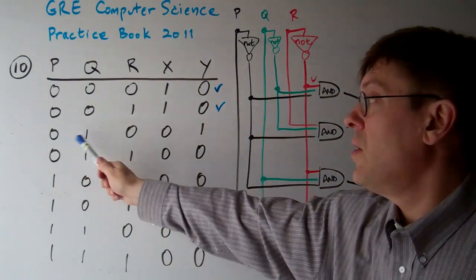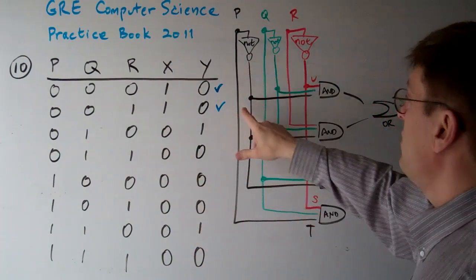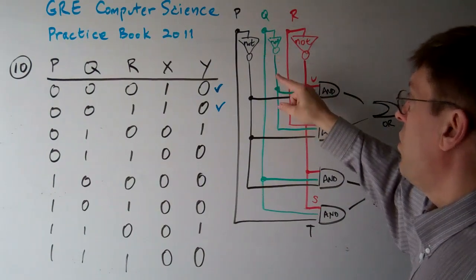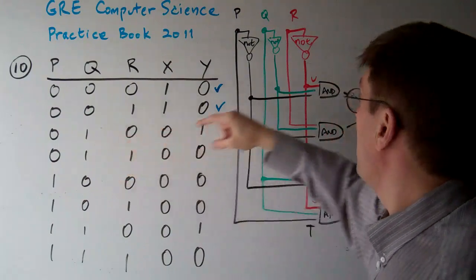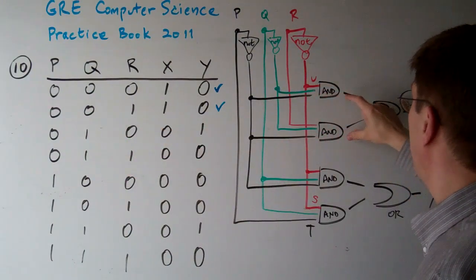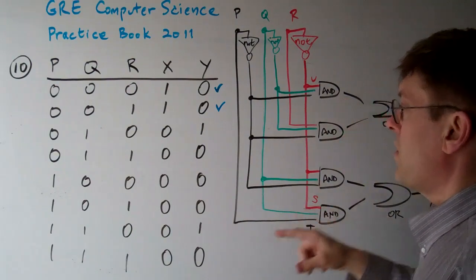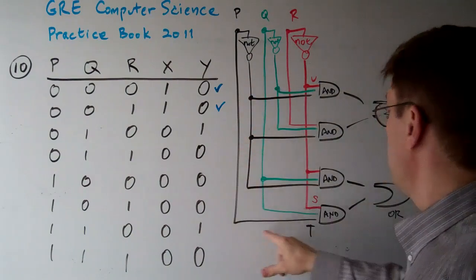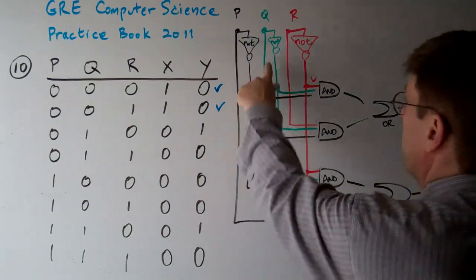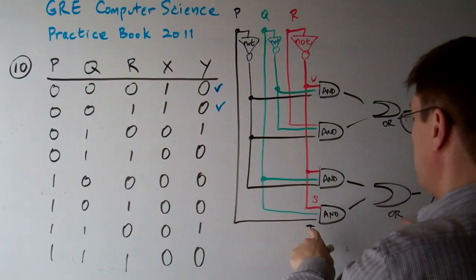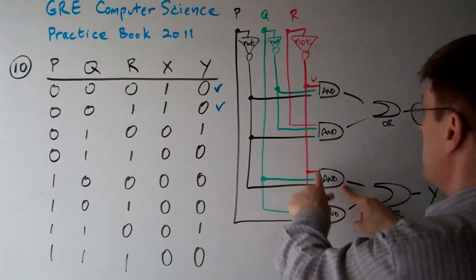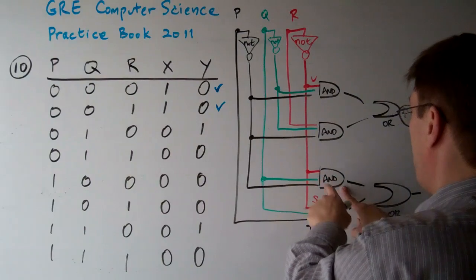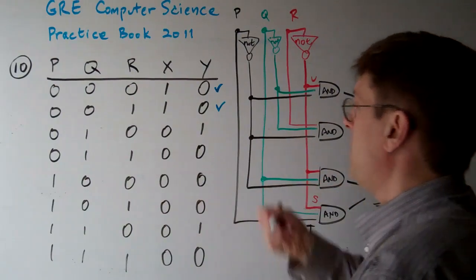Now let's try P is zero, Q is one, and R is zero. Not P is going to be one, but if Q is one, then not Q is going to be zero, so both of those inputs are zero, meaning X has to be zero — and X is zero. For Y, P is zero so that input is zero, but not P is one, Q is one, and R is zero so not R is one. So we have one, one, one and then one and zero — so Y is going to be one. This checks out.